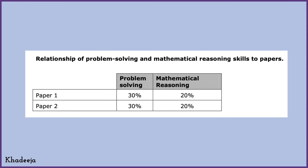Before we move to Paper One, here's something interesting: in both Paper One and Paper Two, problem solving is 30% of the paper and mathematical reasoning is 20%. So together they make up 50% for each paper — 100% in total. Out of that, 30% is for problem solving, meaning you need 10% more problem solving skills than mathematical reasoning.